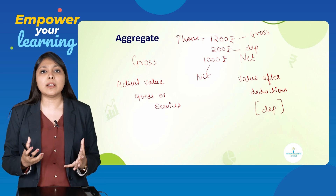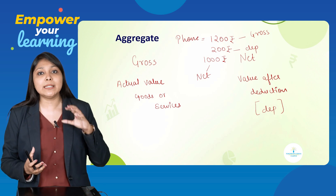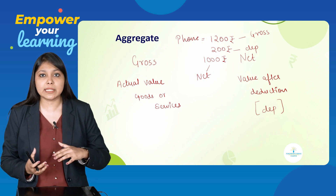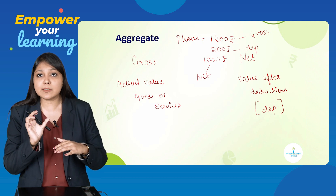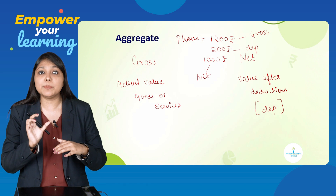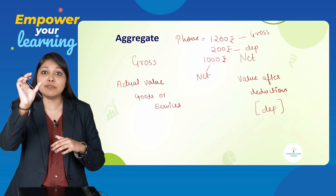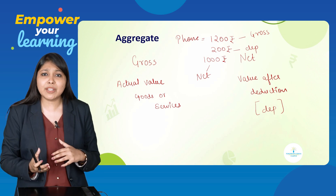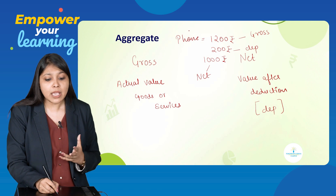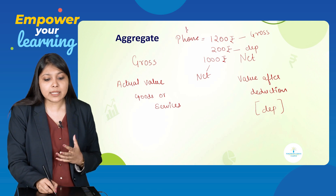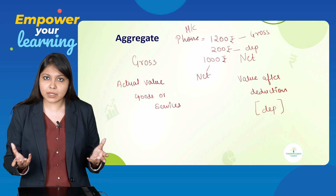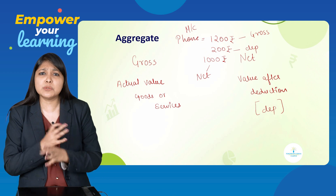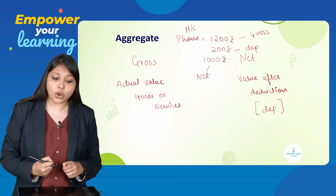Any asset, after depreciation, will not fetch the same value at which it was purchased. Gross is the actual value of a particular good, and net is the value left after deductions. You can also take the example of machinery, equipment, or tools — the same logic applies.